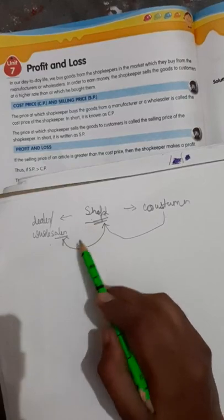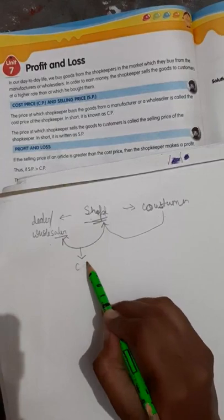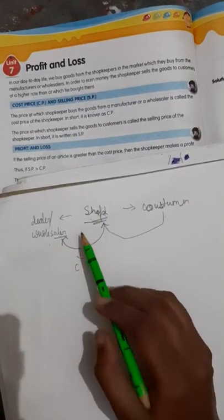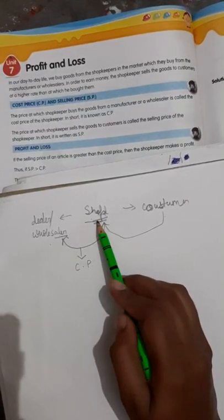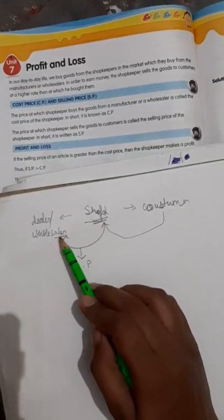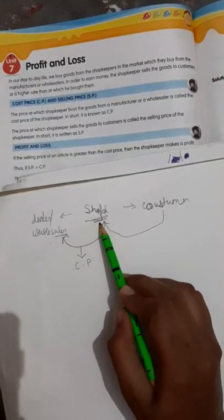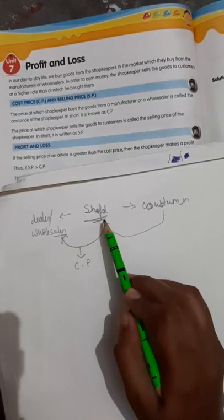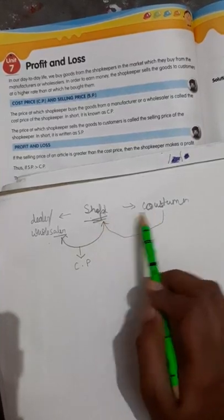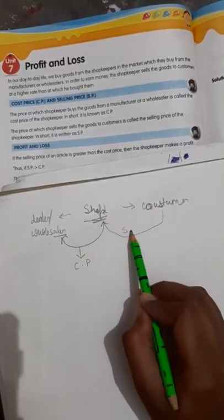Whatever the shopkeeper purchases from the wholesaler, that is called the cost price. And whatever is sold to the customer, that is called the selling price.